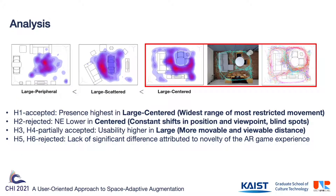We believe presence was highest in the large, centered condition on account of the fact it afforded the widest range of movement in the most restricted form, allowing more exposure to and control over one's physical activities. On the other hand, we posit that the same condition was unfavorable for narrative engagement because constant shifts in user position and viewpoint, along with blind spots, hindered users from creating a cohesive narrative thread from the clues dispersed in space. We also assumed that a large space was beneficial for usability as it afforded more movable and viewable distance.